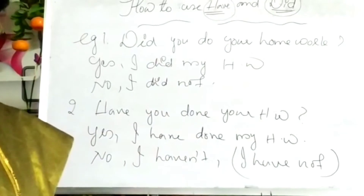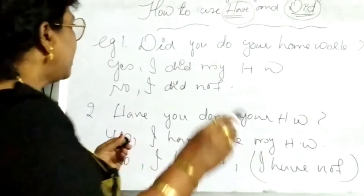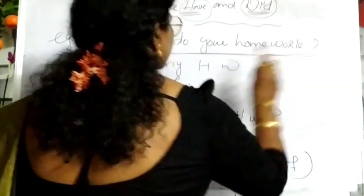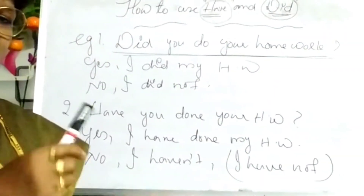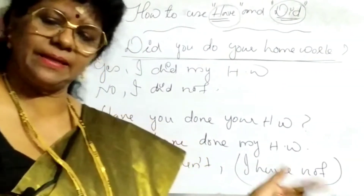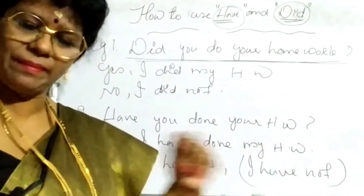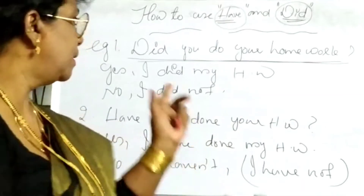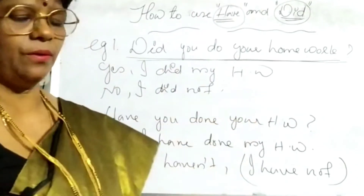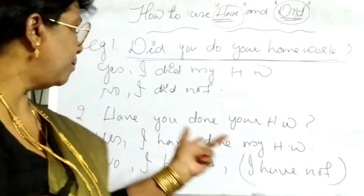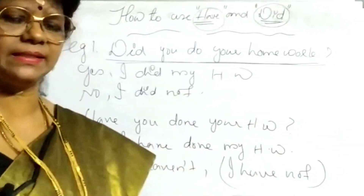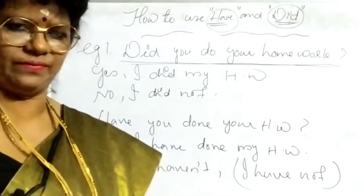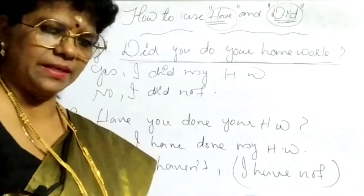So what is the difference between these two sentences? 'Did you do your homework?' refers to something that happened in the past — a specific past time when you completed it. But 'Have you done your homework?' does not mention any specific time — it could be completed just before now.